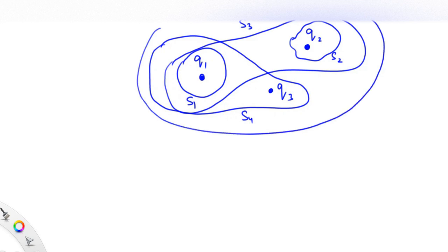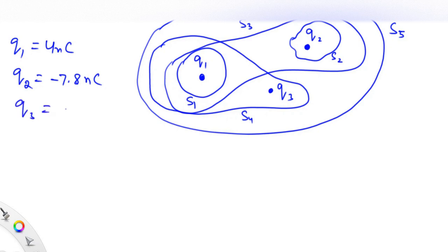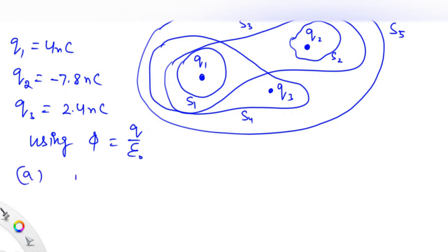Finally, s5 is surrounding all three charged spheres together. The values of the charges are: q1 = 4 nanocoulombs, q2 = −7.8 nanocoulombs, and q3 = 2.4 nanocoulombs. We will use the formula for electric flux: φ = q / ε₀. For the first part of the problem, for surface s1,